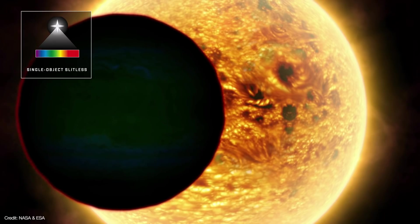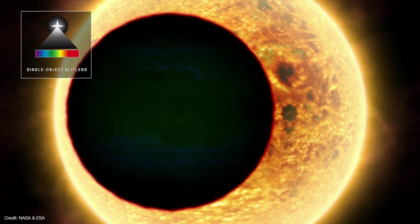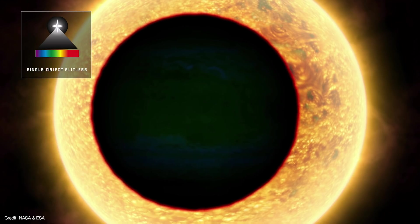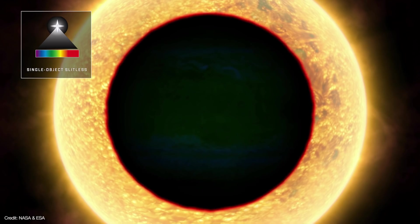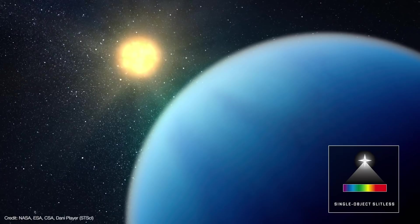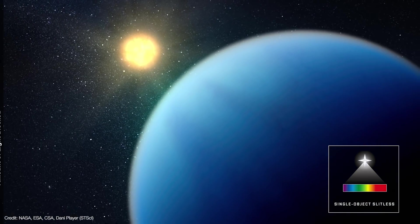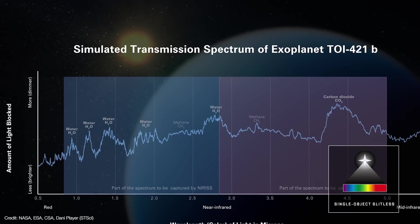In single object mode, NIRISS captures the spectra of exoplanets as they transit in front of their host stars. As the planet transits, its atmosphere absorbs certain wavelengths of light while allowing other wavelengths to pass through. By comparing the star's spectrum before and during the transit, the composition of the planet's atmosphere is revealed.